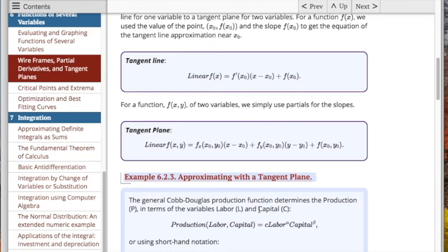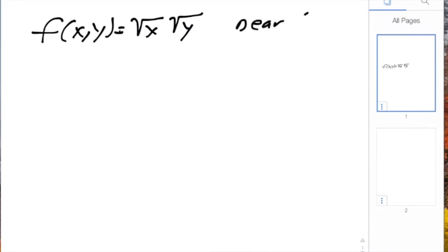Rather than doing the problem in the exercise, I'm going to look at a simpler mathematical problem. So I'm going to look at the function f(x,y) equals the square root of x times the square root of y near (4,9). Now we can plug that in and see that f(4,9) is equal to 6.